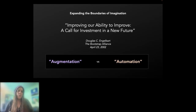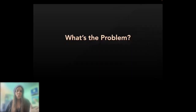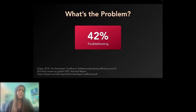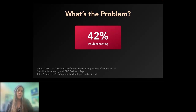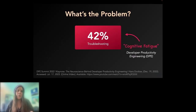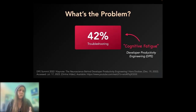What's the problem? In a recent study by Stripe, developers were spending 42% of their time in an average week troubleshooting bad code. That's a lot. Hans Docktor, founder of Gradle, gave an amazing keynote at the DPE Summit on the neuroscience behind developer productivity engineering. He talks about this problem in terms of cognitive fatigue and why tackling and reducing troubleshooting time specifically is so important. These frustrating experiences of being confused and stuck wear down our capacity to do productive work, and yet it's difficult for this problem to get the attention it deserves because it's largely invisible to the business.